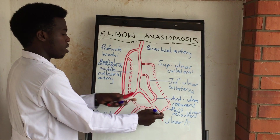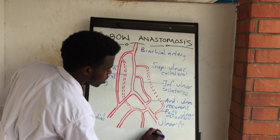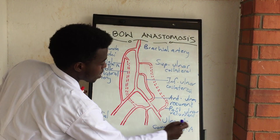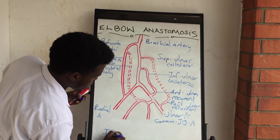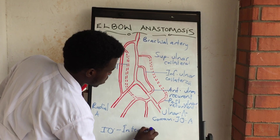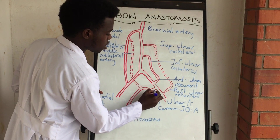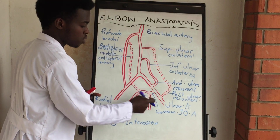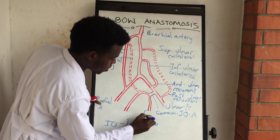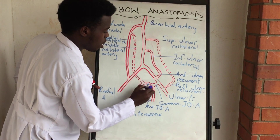What comes next is the common interosseous artery — this other branch is going to be the common interosseous artery. This common interosseous artery gives us two branches: the anterior interosseous artery and the posterior interosseous artery.